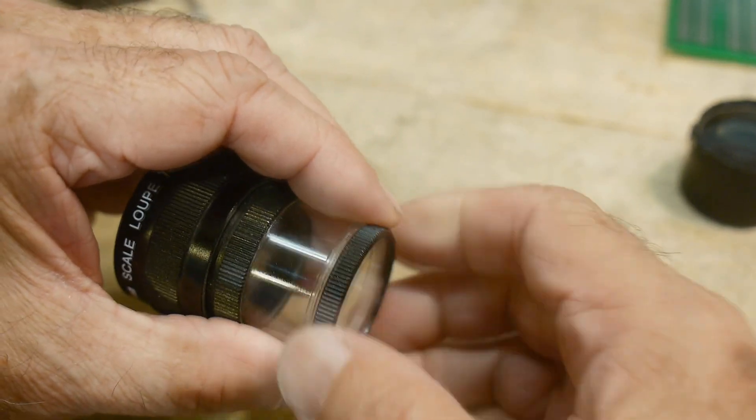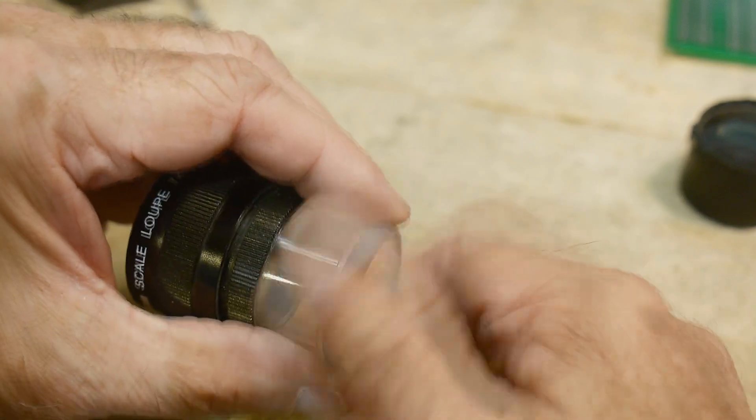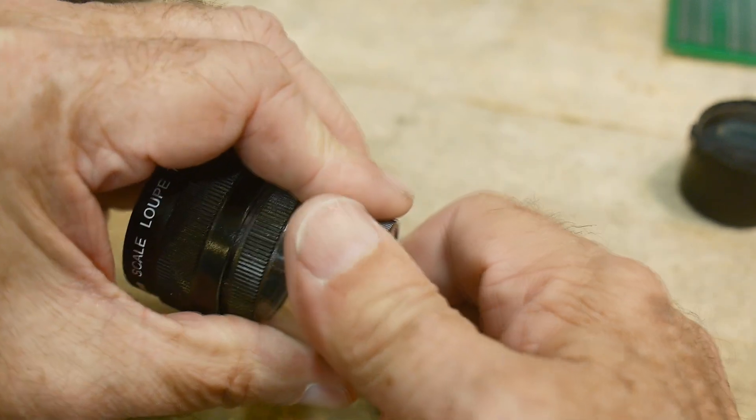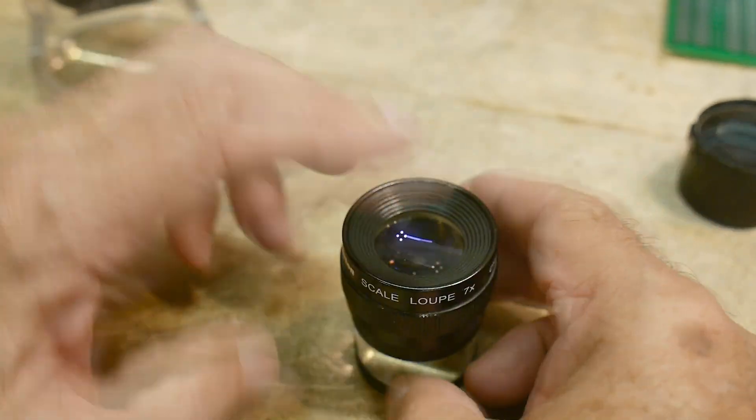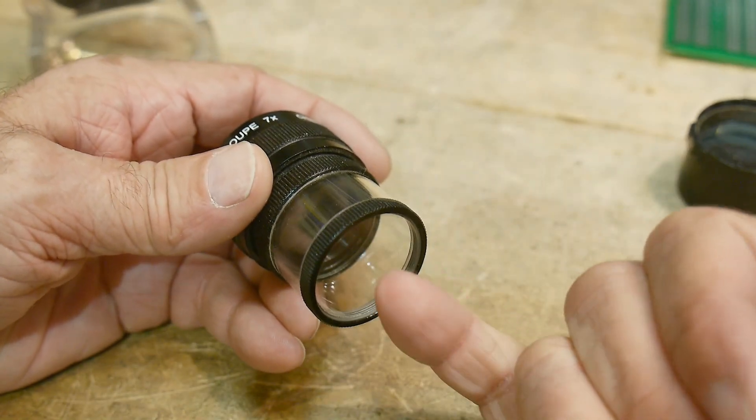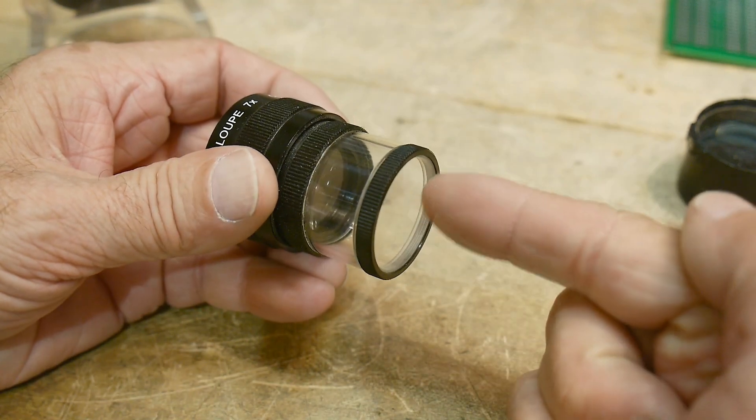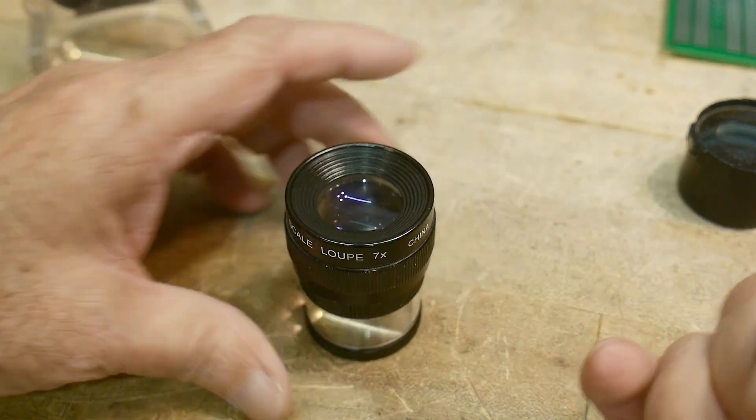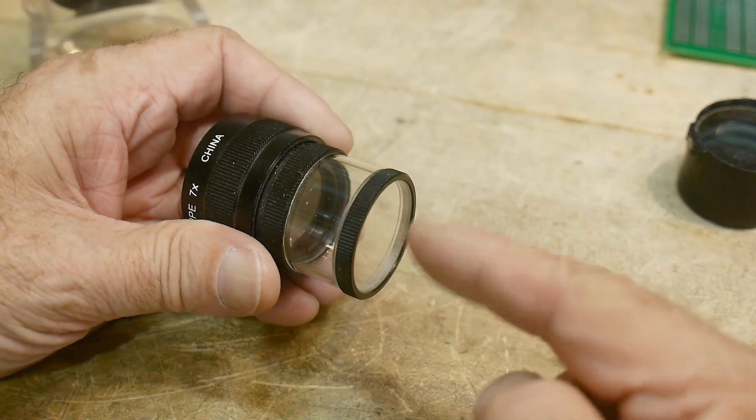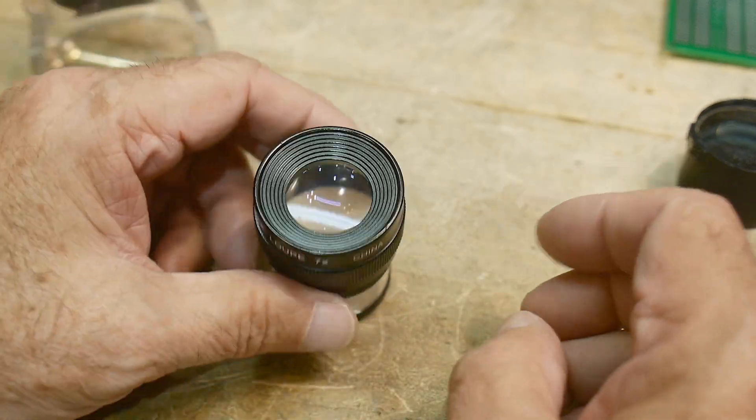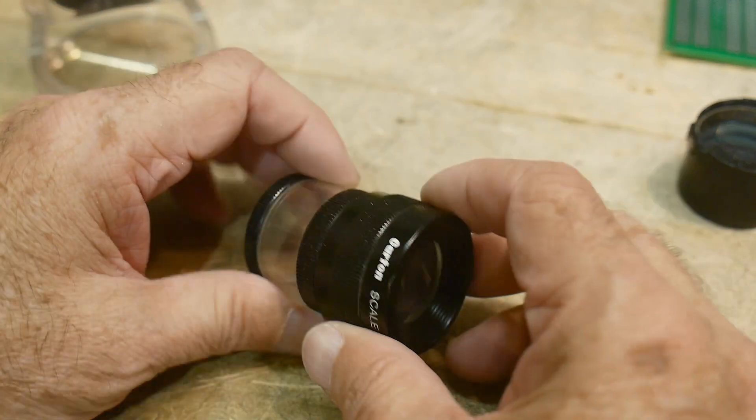This is at the working distance, so the etched scale on it is right here on this surface. And so when you focus it onto the bench, this scale is also perfectly in focus. Now the way that you use these things is this one has, you grab here and then you can turn this.